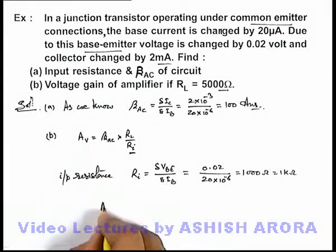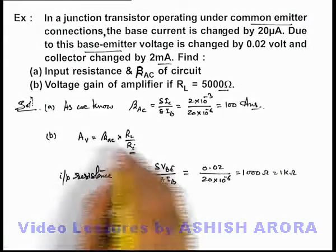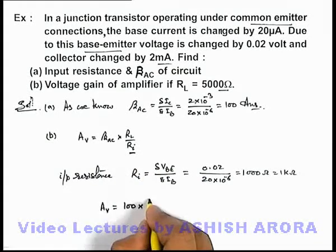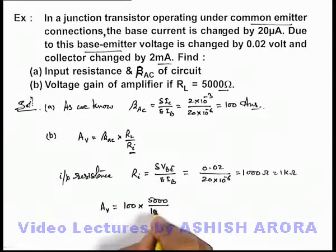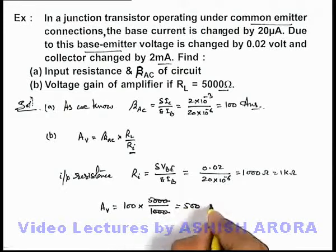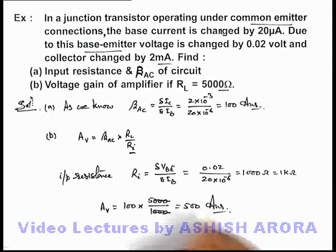So in this situation, we can write down the value of voltage gain as beta AC which is 100, multiplied by R_L we are given with 5000, divided by the input resistance is 1000. So in this situation, this will give us the value 500. That will be the answer to part B of this problem.